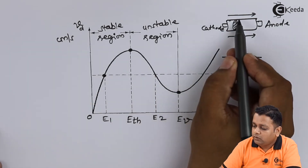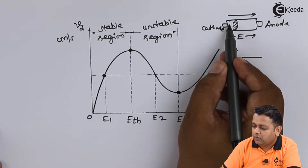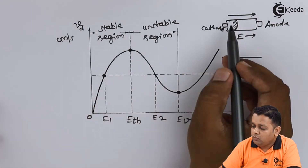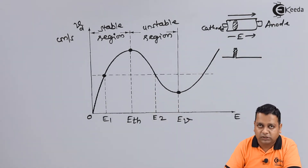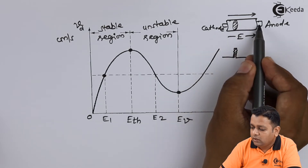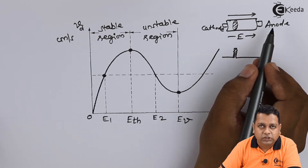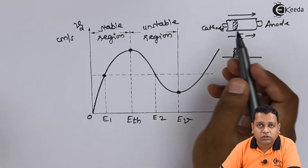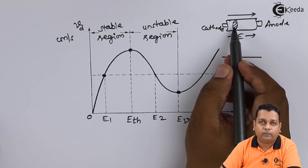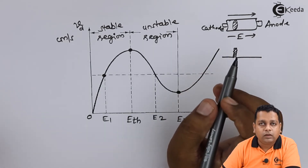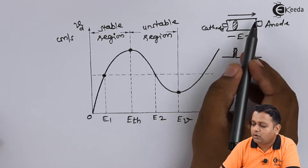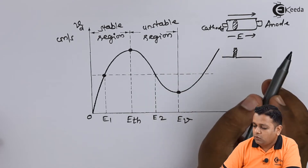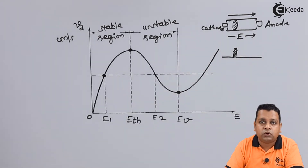Before the domain forms, the region has low potential. After the domain forms, it has higher electric potential. Once the domain reaches the anode, the electric field increases above the threshold and a new dipole — a high-field domain — forms and again drifts from cathode to anode. This process keeps repeating, and we obtain pulses of current as the output of this device operation.